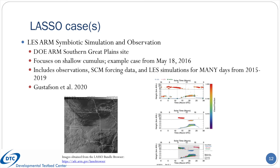Another included case that relies on DOE ARM data is the LASSO case, which stands for LES ARM Symbiotic Simulation and Observation. It represents one of many cases available from the LASSO program, and uses the ARM SGP Supersite observational platforms, but the included cases focus on shallow continental cumulus. The case from May 18, 2016 was arbitrarily chosen for example purposes. One of the really great things about this program is that they provide not only forcing and initial conditions for SCMs, but also observation data and LES simulations for every case for comparison. To date, there are many cases available from 2015 through 2019. Gustafson and co-authors described the program in their 2020 paper.